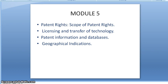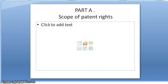We will move on to the scope of patent rights — that is Part A on the second slide. The scope of a patent right is essentially a boundary. The patent rights provide the patent holder the right to prevent unauthorized persons from making, selling, using, or manufacturing the patented invention.